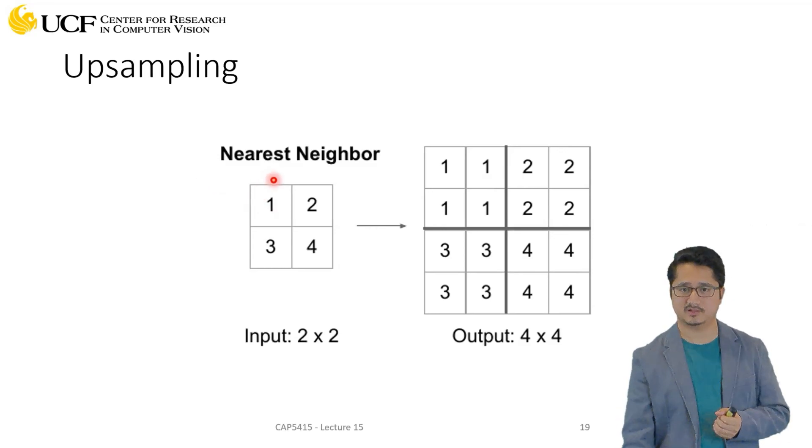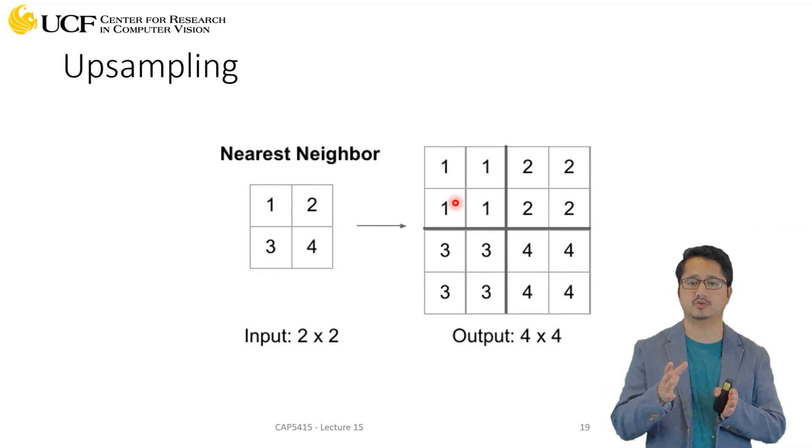Those kernels could be just 1x1 kernels and you can apply them. So the first kernel will give you this value, the second kernel will give you this value, third kernel is going to this value, fourth kernel is going to this value. Those kernels are actually learnable, so in this case you're not just doing nearest neighbor, you're actually learning how to do upsampling.